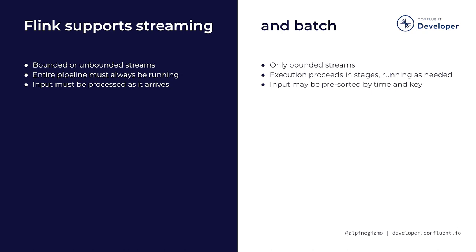One of the available optimizations for batch processing is to pre-sort the input to make it easier to process. For example, databases sometimes implement joins by first sorting the input tables, after which the join is easier to do. Flink can do the same thing, but only in batch mode.